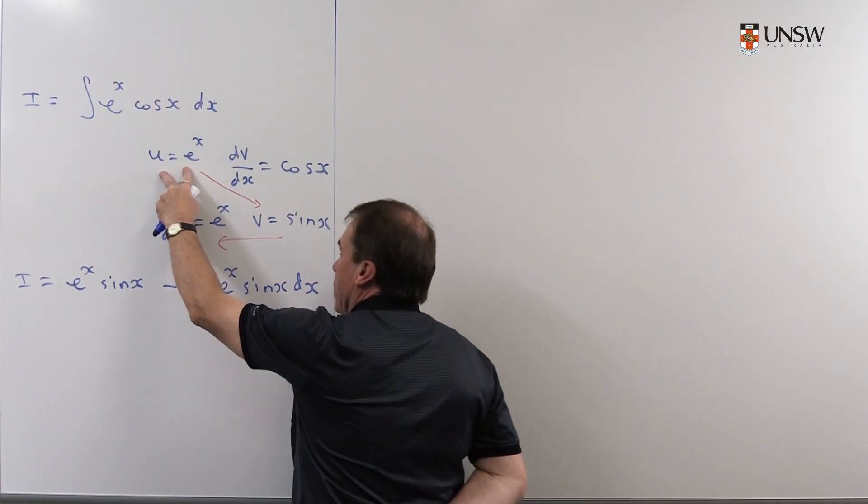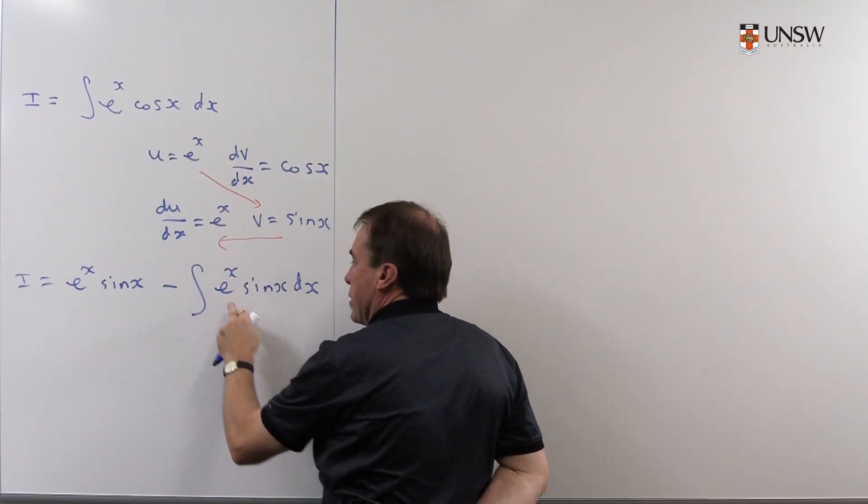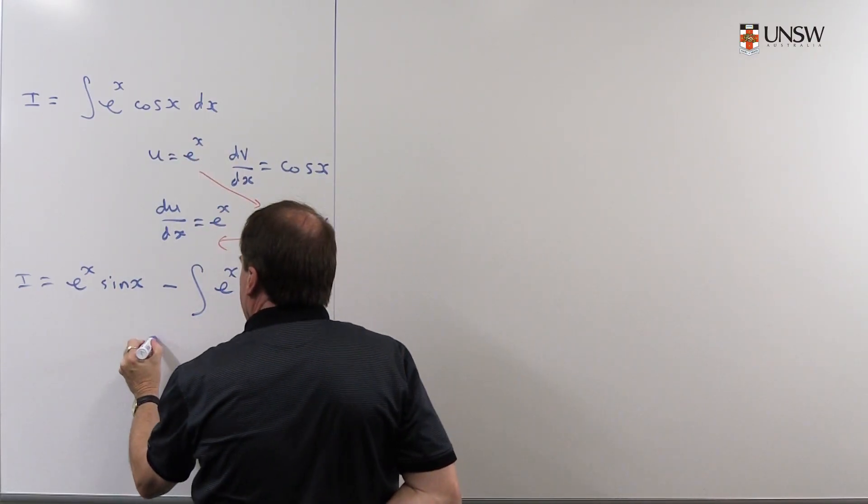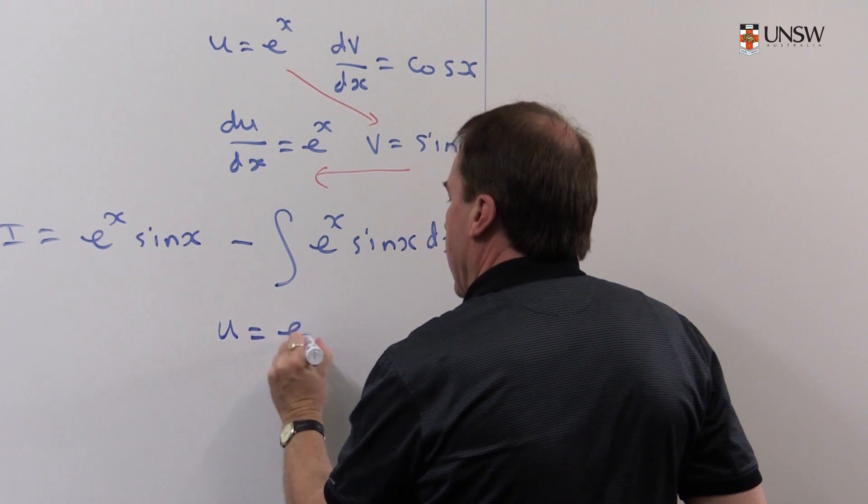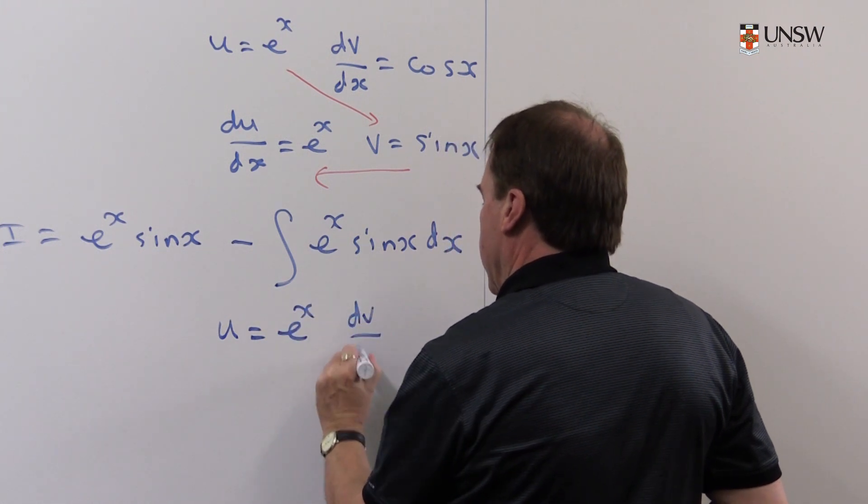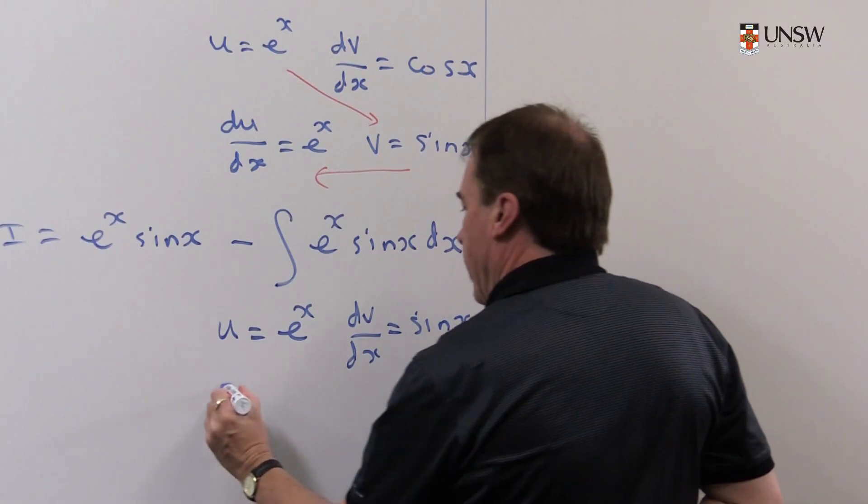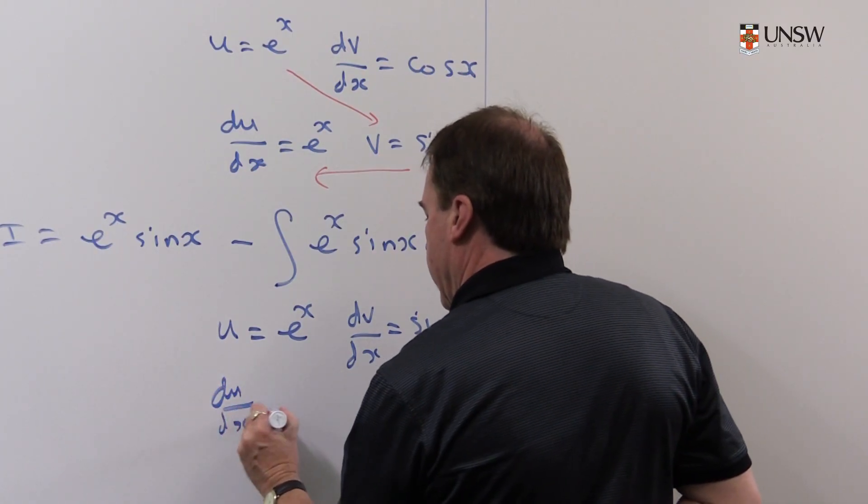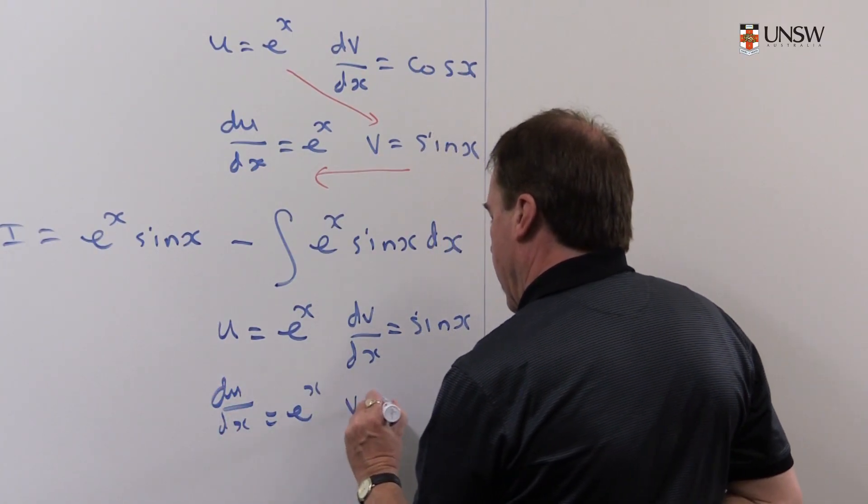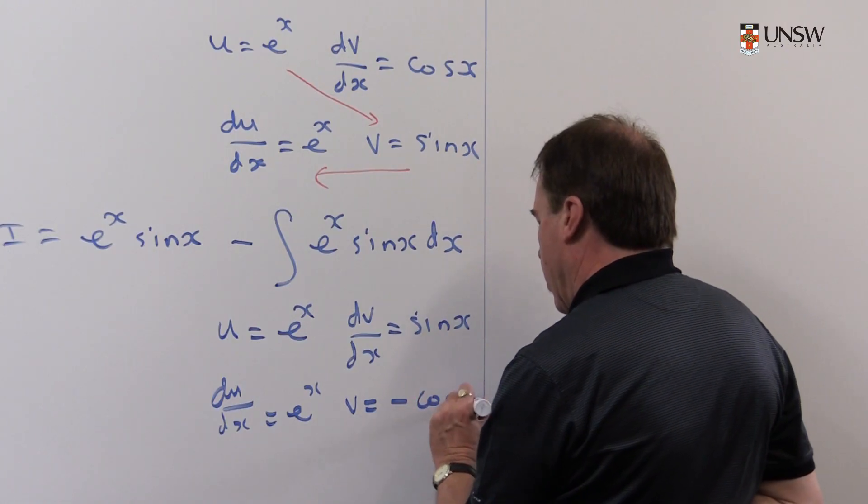So because I chose u to be e to the x up here, I'm going to be consistent down here and I'm going to put u equals again e to the x and v is minus cos x.